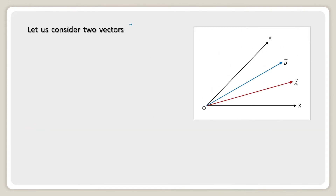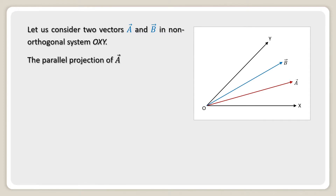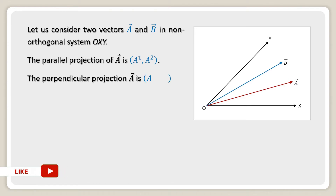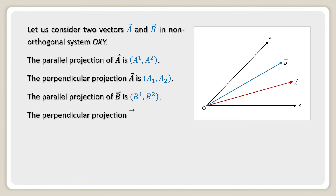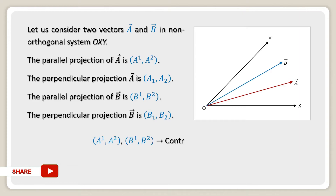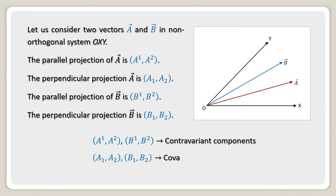Let us consider two vectors a and b in a non-orthogonal system Oxy. The parallel projection of a is a upper suffix 1, a upper suffix 2, and the perpendicular projection of vector a is a lower suffix 1, a lower suffix 2. The parallel projection of vector b is b upper suffix 1, b upper suffix 2, and the perpendicular projection of vector b is b lower suffix 1, b lower suffix 2.